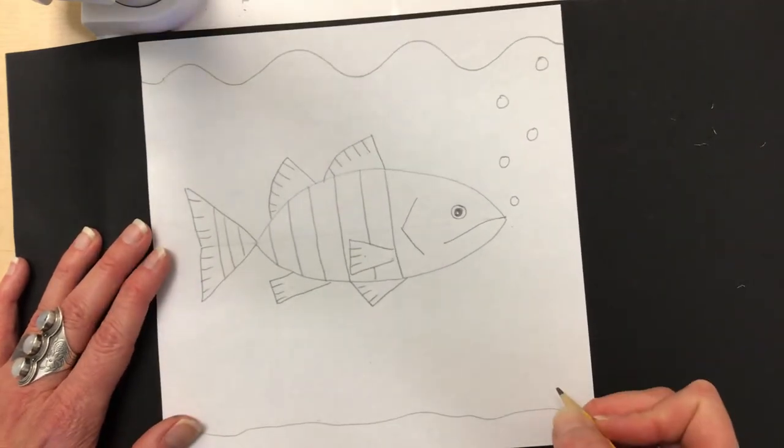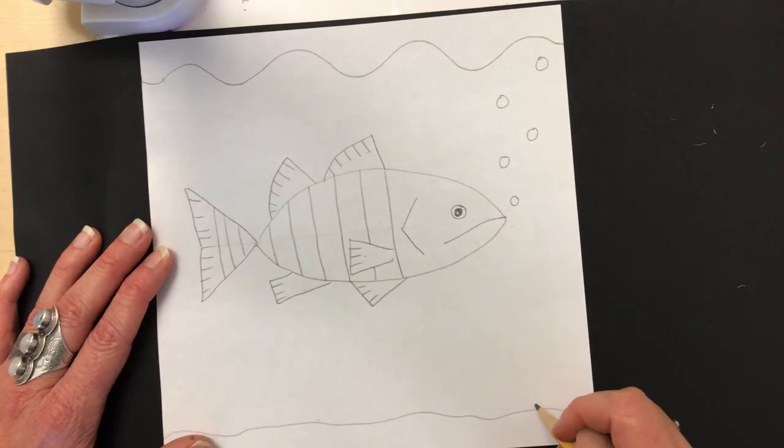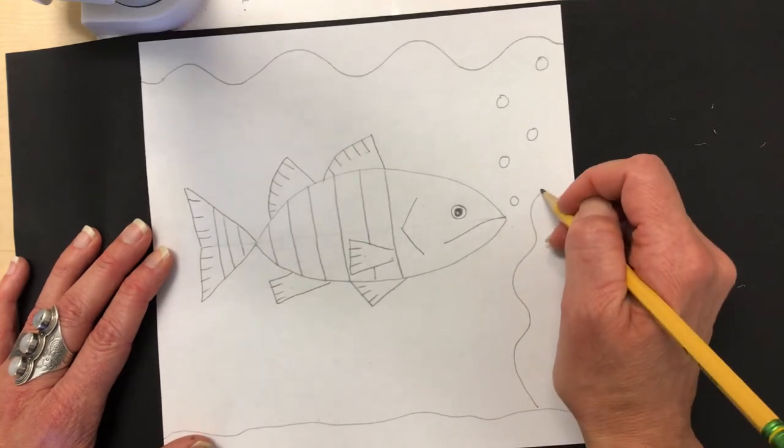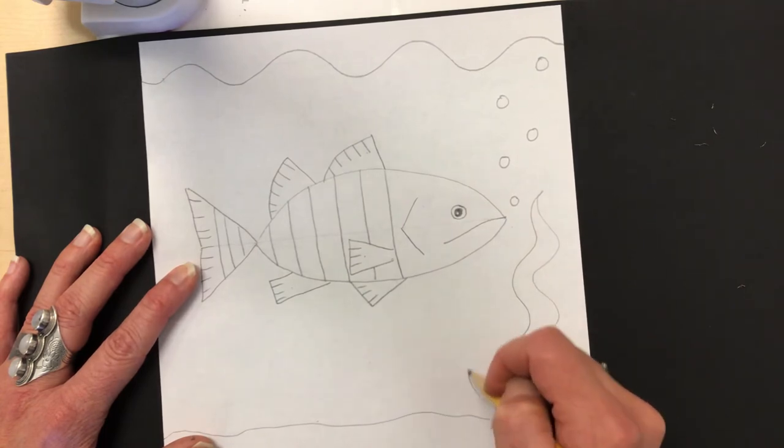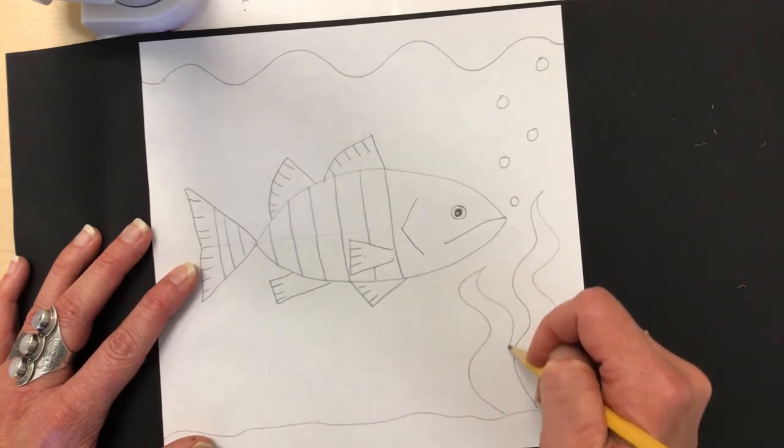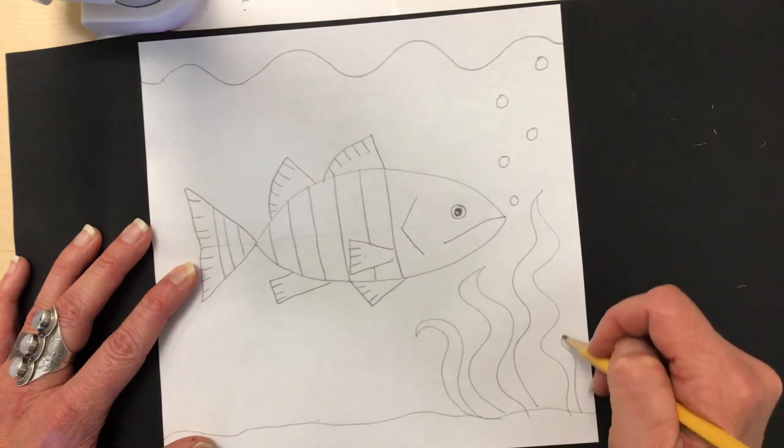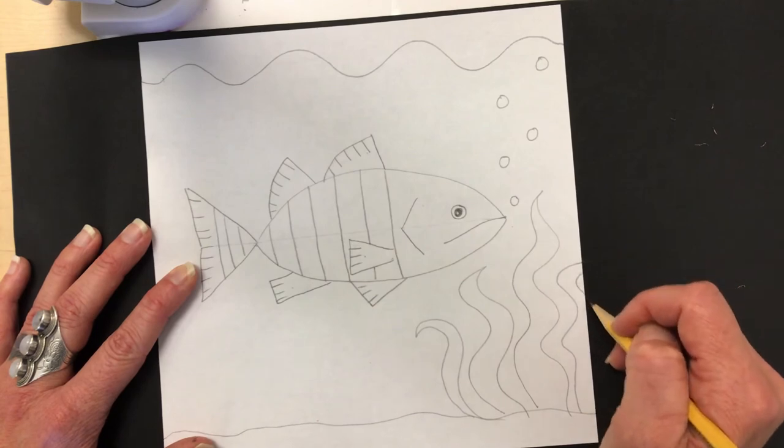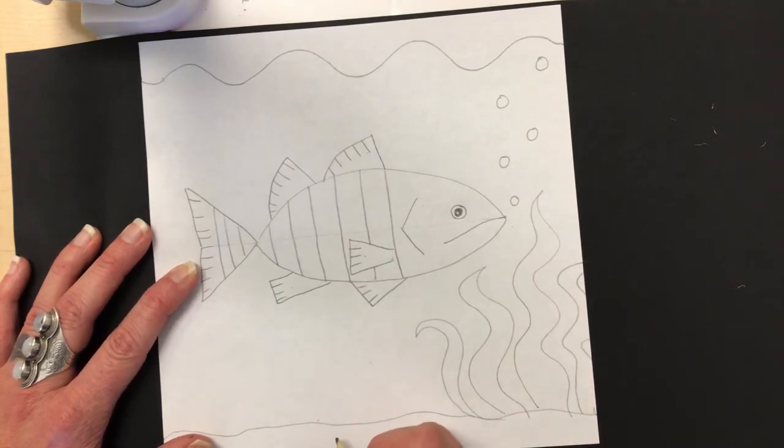Next, I'll add some other things. I could draw some other fish if I want to. I could make some seaweed with a wavy line and then another wavy line back. Seaweed is really fun to make. And I'm going to make it right off the edge of my paper here so that it looks real. There's my seaweed.